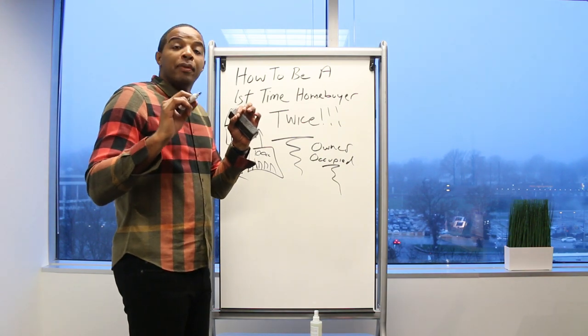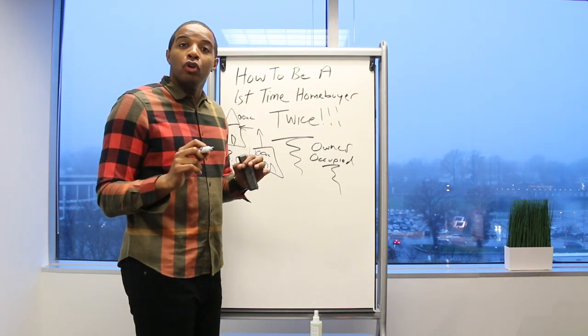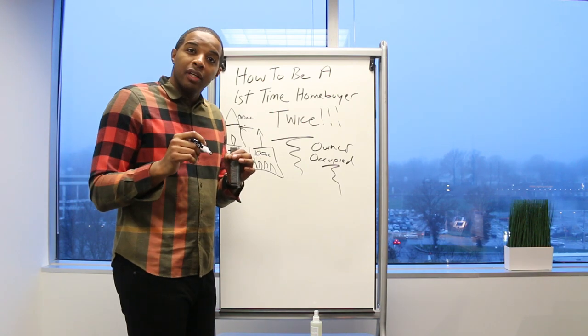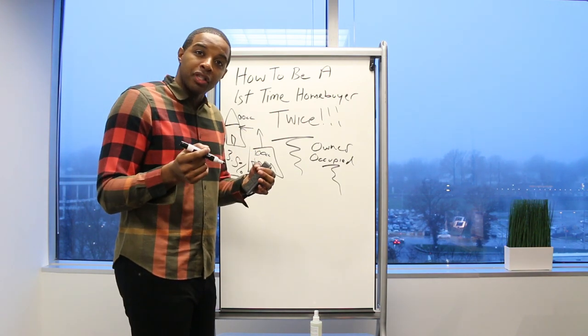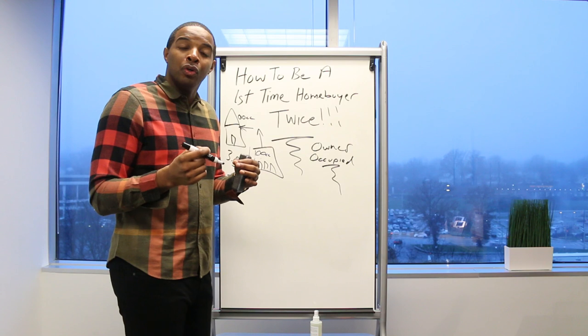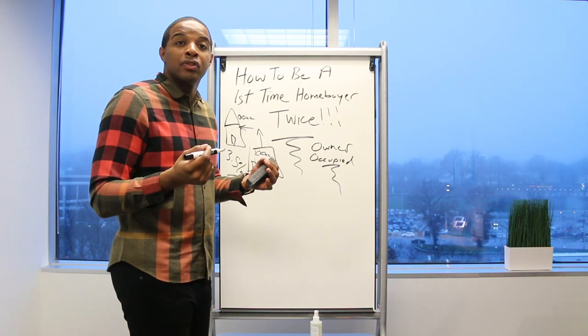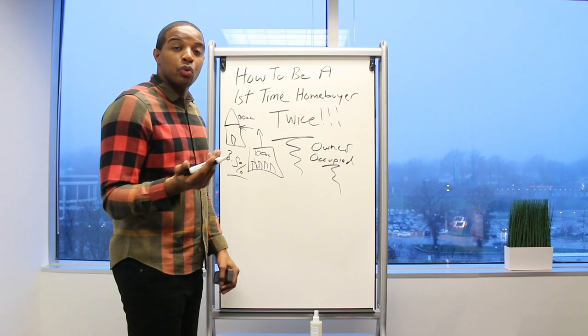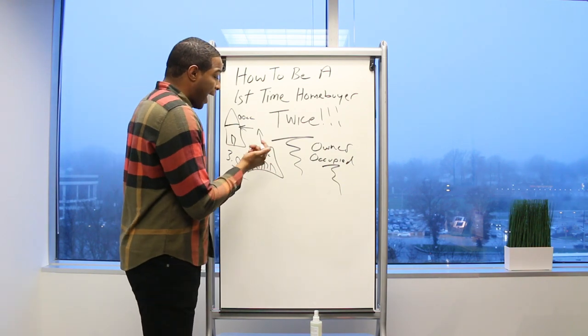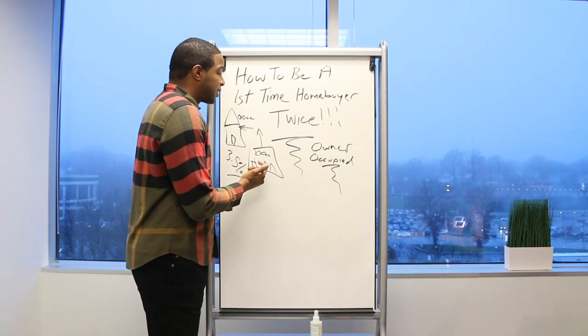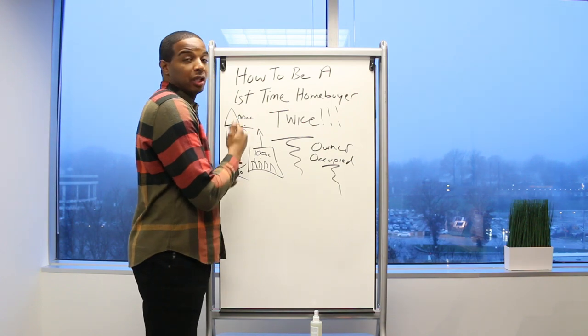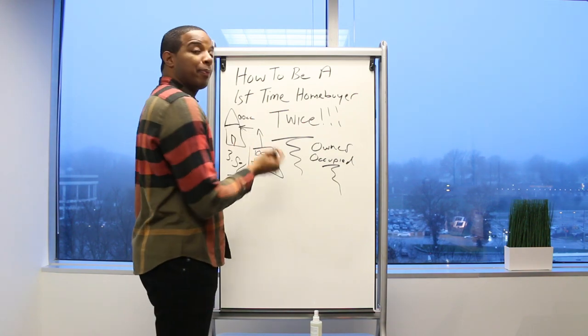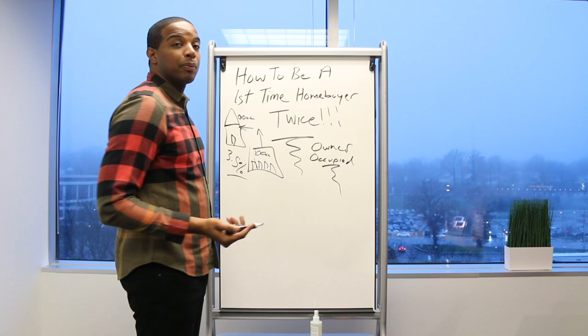This now makes sense that you started as an investor living in one unit renting the other units out, and now you want to be an owner-occupied borrower doing a single family. That now makes sense to an underwriter. The whole point is not to be fraudulent or dupe the system. The whole point is to be strategic in how you purchase real estate.